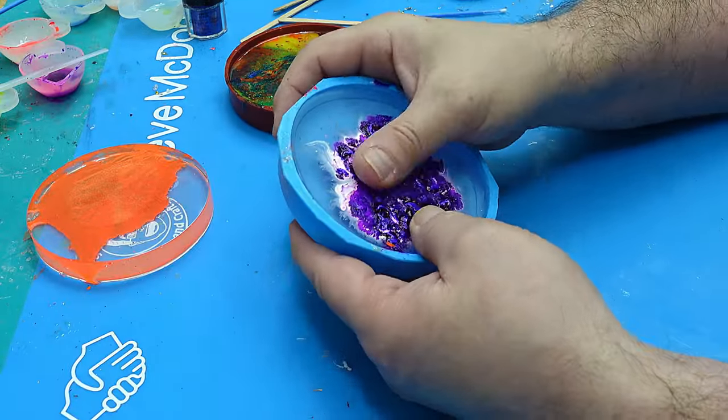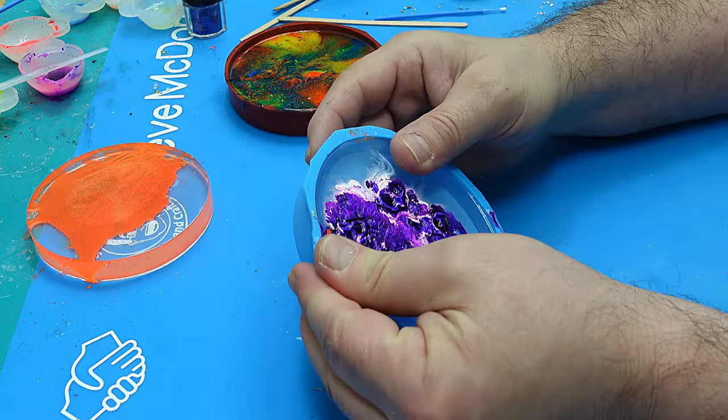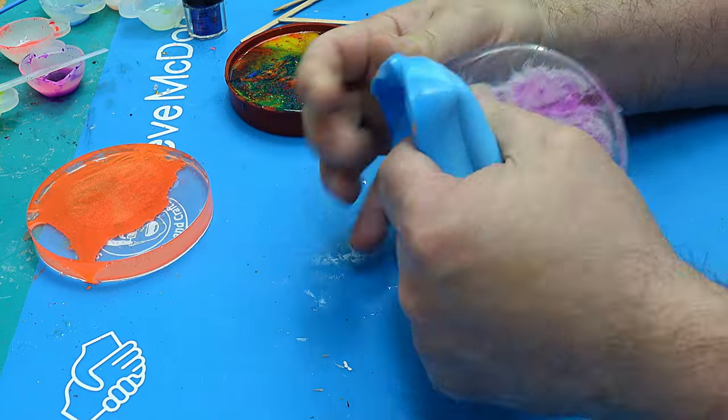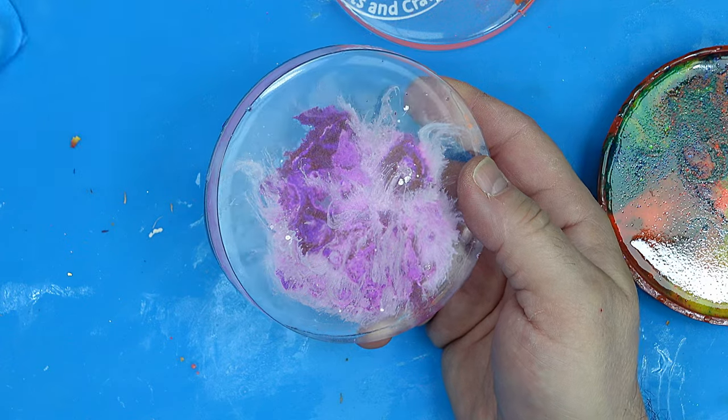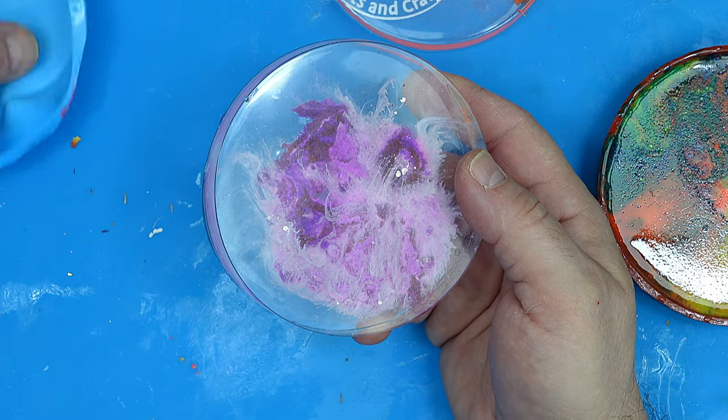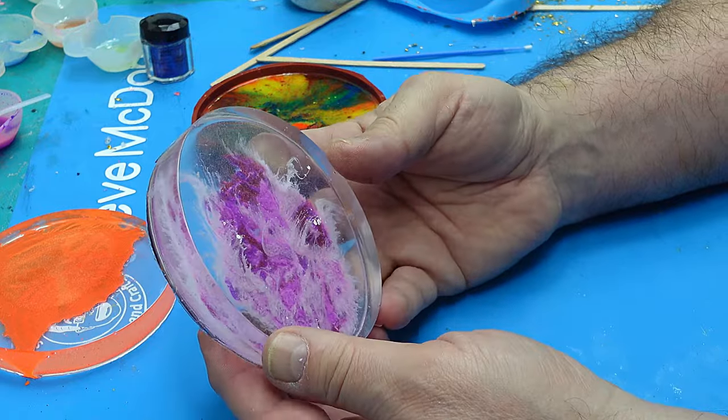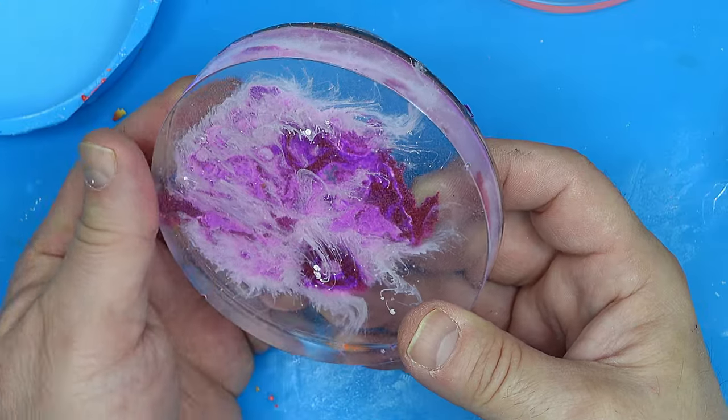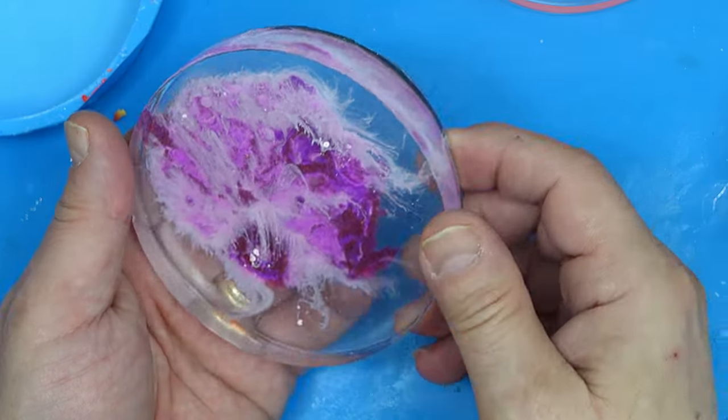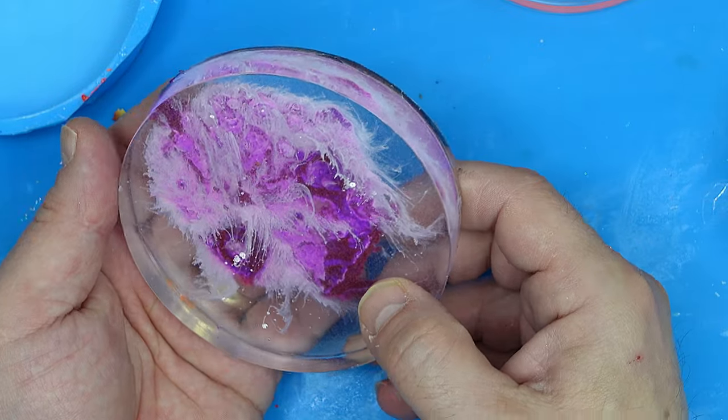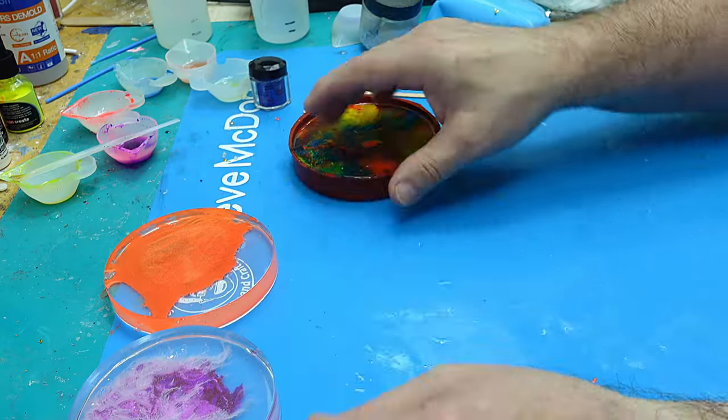This one has gone really weird - it's like a little landscape in an odd color. Again, it hasn't done much because it just sat on the top. It has come through a little bit, but it hasn't drawn any of that color through using the sinker. I would say those two are not a great success.